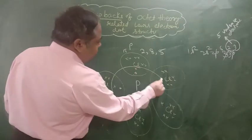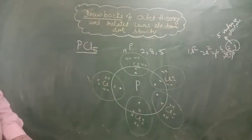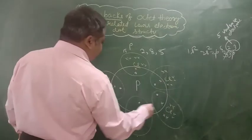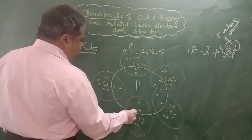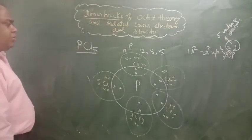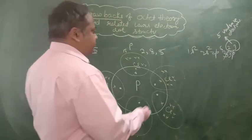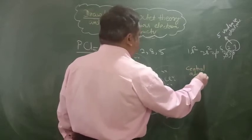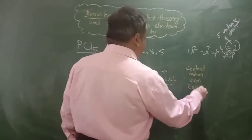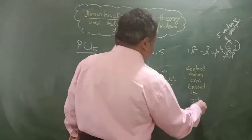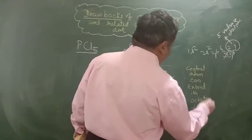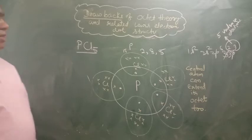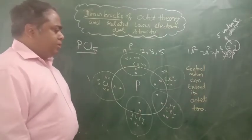Chlorine is completing its octet, no doubt, but phosphorus is not able to complete its octet. It is having 10 electrons: 1, 2, 3, 4, 5, 6, 7, 8, 9, 10. So phosphorus is embracing 10 electrons. So we have seen the previous case in which less than 8 electrons was also forming stable molecule, and here we are seeing that more than 8 electrons is also forming a stable molecule.